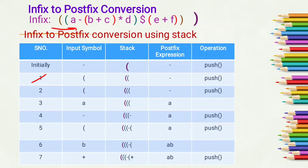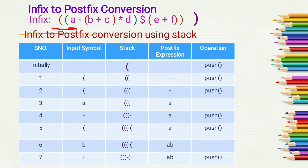The first input symbol we get is an open bracket. Whenever we get an open bracket we simply push it into the stack. So we have two open brackets in the stack and we perform a push operation. The second input symbol is again an open bracket, so simply push it into the stack.